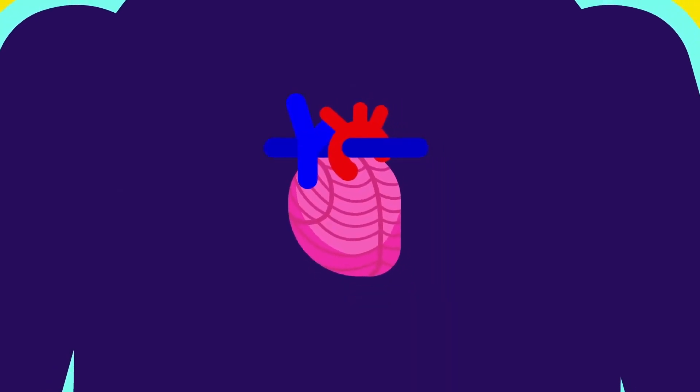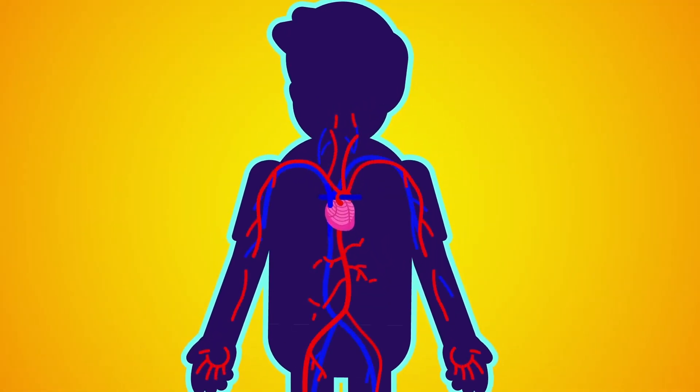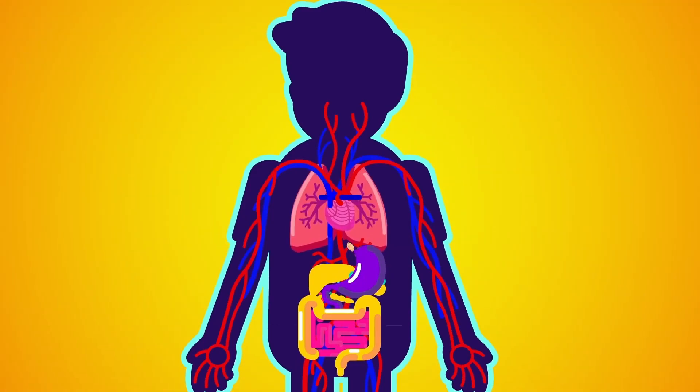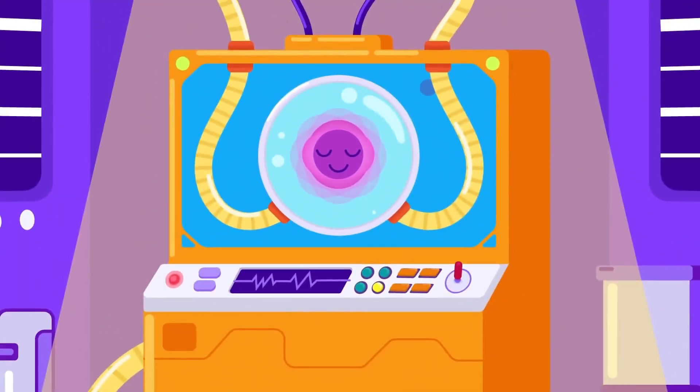Everything inside the human body starts from the stem cells. They later form the tissues that develop into organs. The organs come together to form organ systems that work in coordination under favorable conditions to ensure the proper functioning of the body's cells.